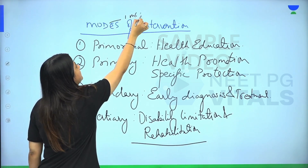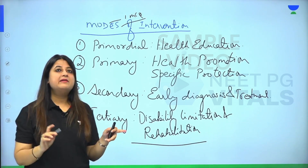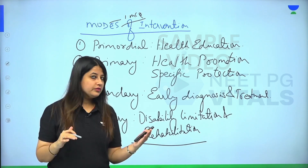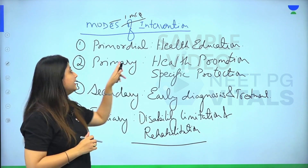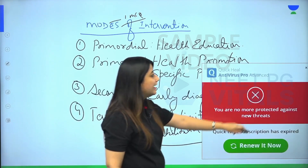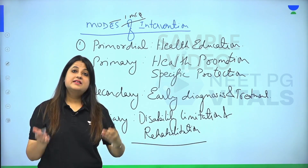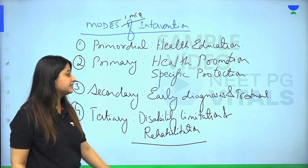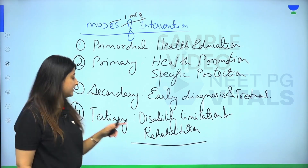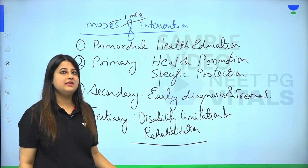Again, one MCQ from this topic. They straight away ask: primordial level of prevention, what is the mode of intervention? Primordial: no risk factors, so health education. Primary: risk factor is present but disease has not yet started, so health promotion and specific protection. Secondary: disease has started but not gone to irreversibility, so early diagnosis and treatment. Tertiary: complications have occurred, so disability limitation and rehabilitation.